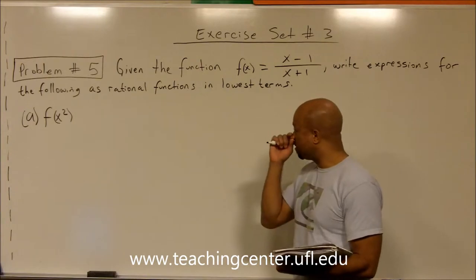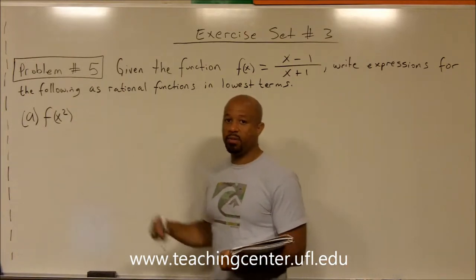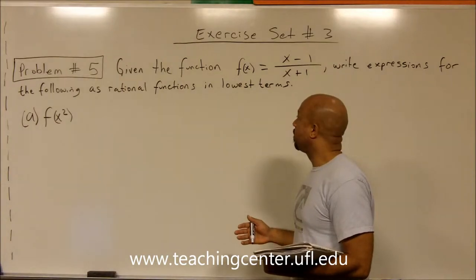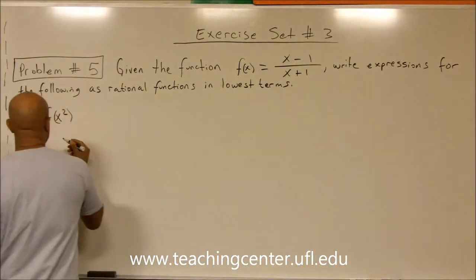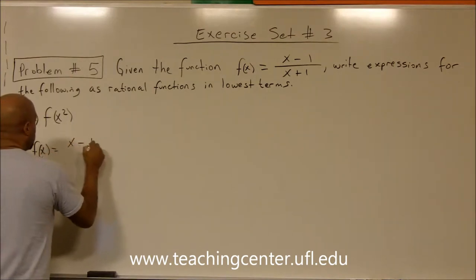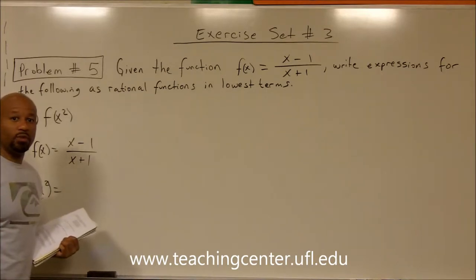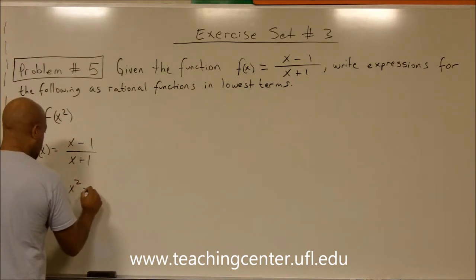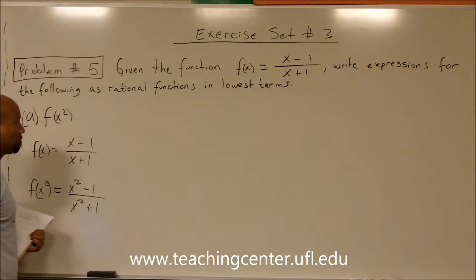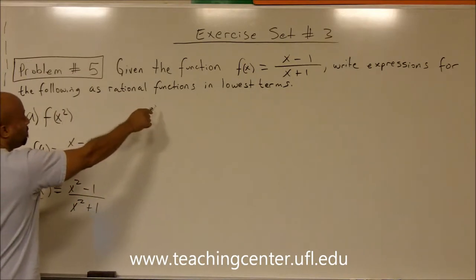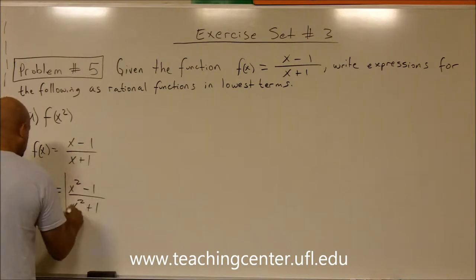In part a, they want us to write the expression for f of x squared. What they mean is we need to substitute in x squared for every place that we see x in the given function. So if f of x equals x minus 1 over x plus 1, then f of x squared is going to be x squared minus 1 over x squared plus 1. We cannot simplify this expression any further, so this is the solution.